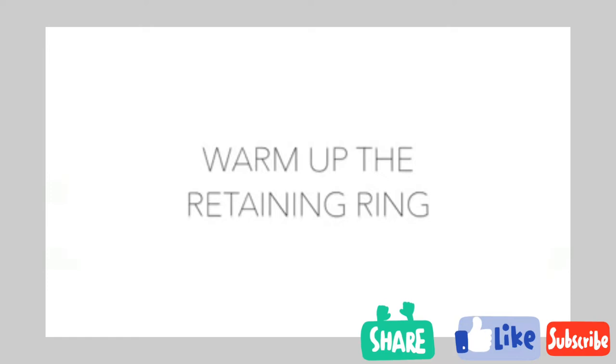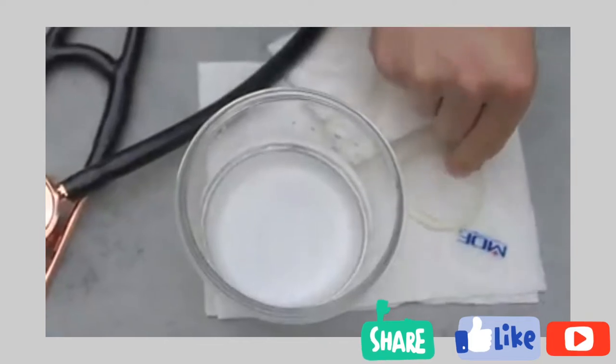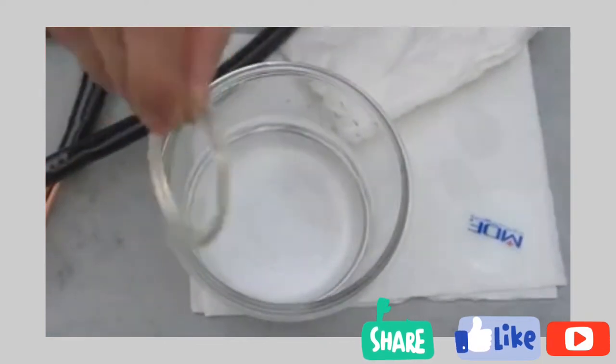To place a diaphragm into your retaining ring, warm up the ring to make it more flexible. You can warm up the retaining ring in warm water or in a cup with a blow dryer.